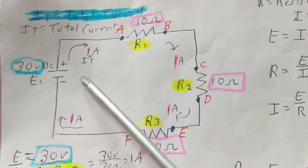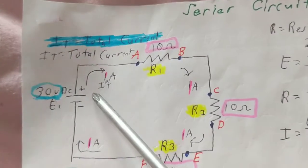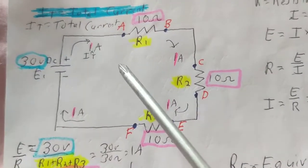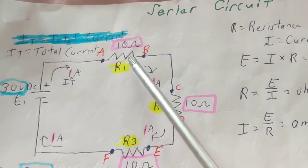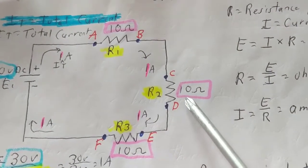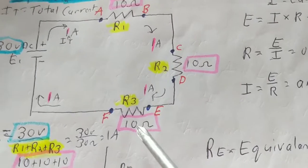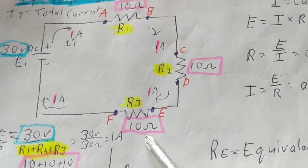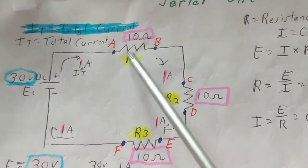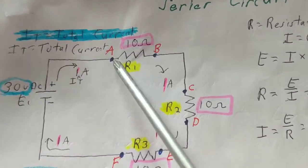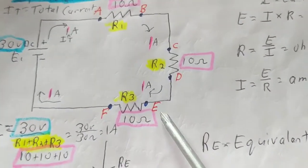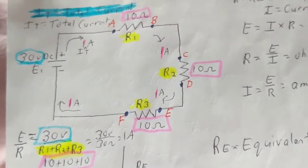We have three resistors connected in series. R1 is equal to 10 ohms, R2 is also equal to 10 ohms, R3 is also equal to 10 ohms. I have designated the points between these resistors A, B, C, D, E, F, and there's a reason why I did that.